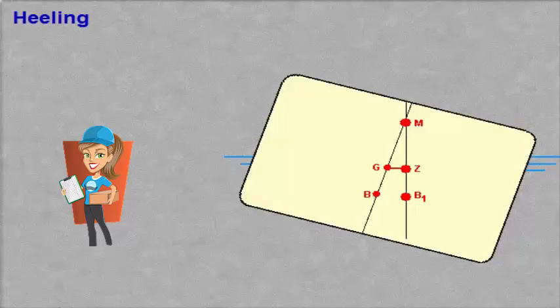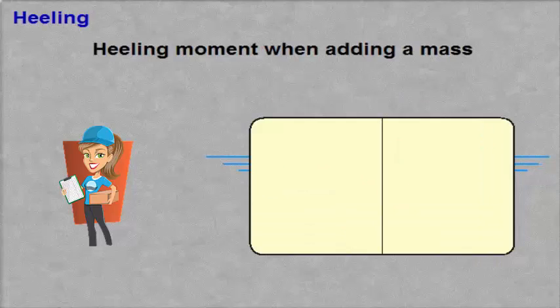On the line drawn between B1 and M, we now get a new point called Z. Z is placed at a right angle from the line B1-M through G. The distance between G and Z is a measurement of the forces trying to keep the ship from heeling.